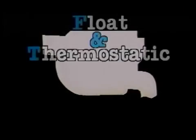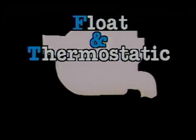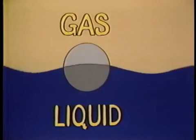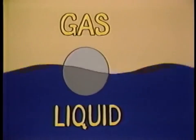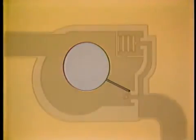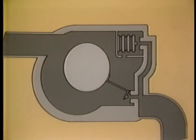Float and thermostatic traps offer a combination of mechanical and thermostatic operation. A closed float is used to sense the density difference between a gas and a liquid. The float is attached to one end of a lever which pivots inside the trap. At the opposite end of this lever is a valve that is seated when the float is at rest.